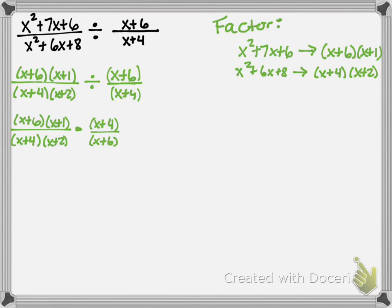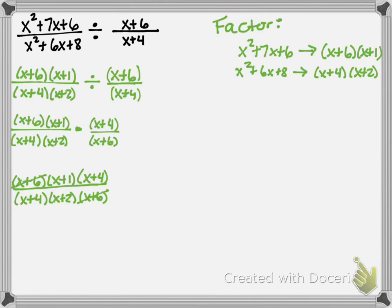Just like we did in class, we make a big fraction. Everything in the numerator of the two little fractions — (x+6), (x+1), and (x+4) — goes on top of the big fraction. Everything in the denominator goes on the bottom. Now we check: (x+6) on top cancels with (x+6) on bottom; (x+4) on top cancels with (x+4) on bottom; (x+1) on top has nothing to cancel with. What's left over is (x+1) over (x+2).